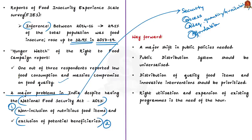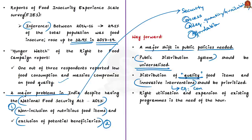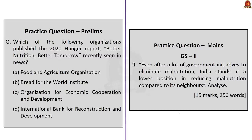As a way forward, the authors call for a major shift in public policies. The government should work to universalize the PDS as soon as possible, prioritize distribution of quality food items, and pursue innovative interventions such as setting up community kitchens. There should also be right utilization and expansion of existing programs to cover more vulnerable population. When these aspects are fulfilled, we can surely alleviate children from malnutrition. This concludes the analysis of this editorial article.